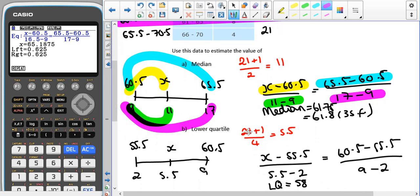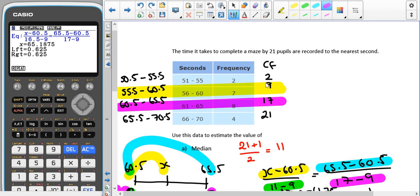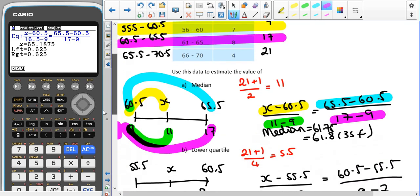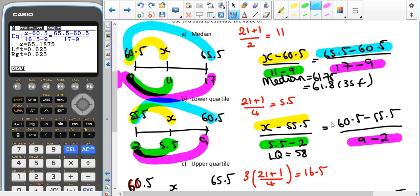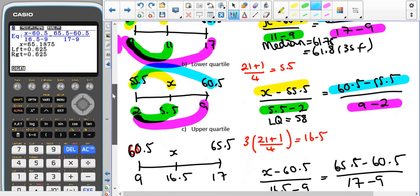For the lower quartile, doing 21 plus 1 divided by 4 gives us 5.5. This time it's within the second group, because that one starts at 2 and ends at 9. So we've got 55.5 to 60.5. And again, we'd have x minus 55.5 divided by 5.5 minus 2 equals 60.5 minus 55.5 divided by 9 minus 2. And that ends up giving us a lower quartile of exactly 58.